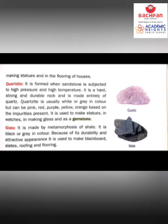Now let's talk about slate. It is made by the metamorphosis of shale. Slate is black or grey in color. Because of its durability and attractive appearance, it is used to make blackboards, for roofing, and even for flooring. Remember — slate is formed from shale.